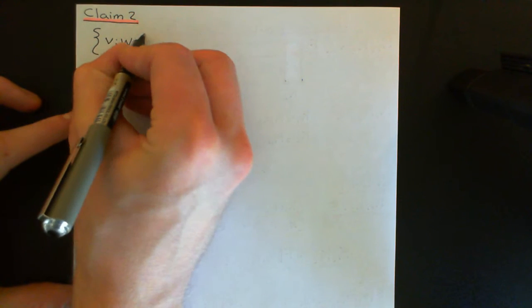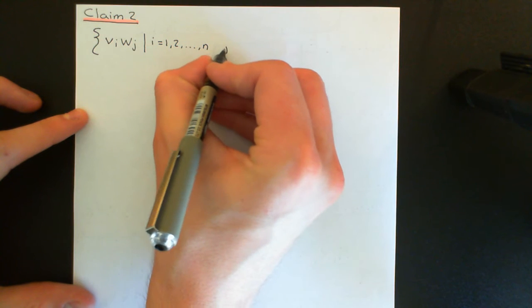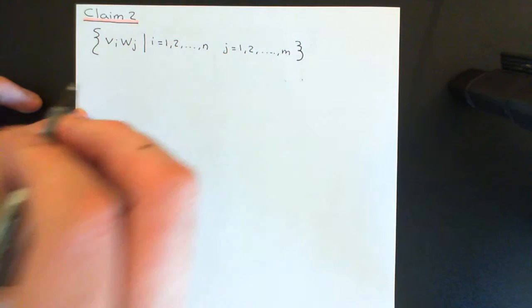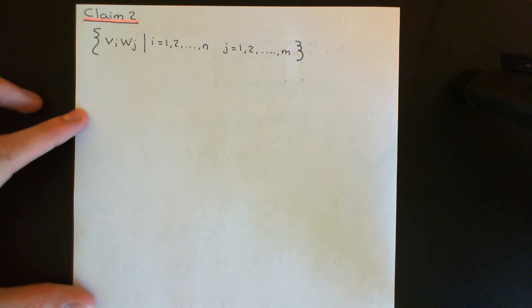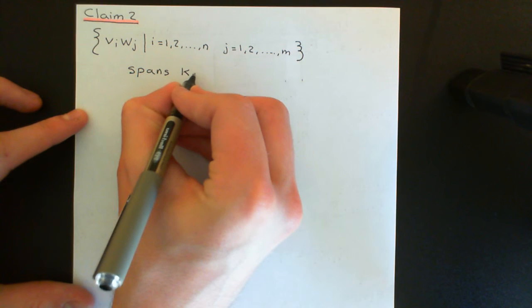Claim 2 concerns a set which is going to span the composite of k1 and k2. Claim 2 is that if we take the set of all things of the form v_i · w_j, where i is allowed to equal 1, 2, all the way up to n, and j is allowed to equal 1, 2, all the way up to m, my claim is that this is not necessarily a basis, but that it does span the composite of k1 and k2.